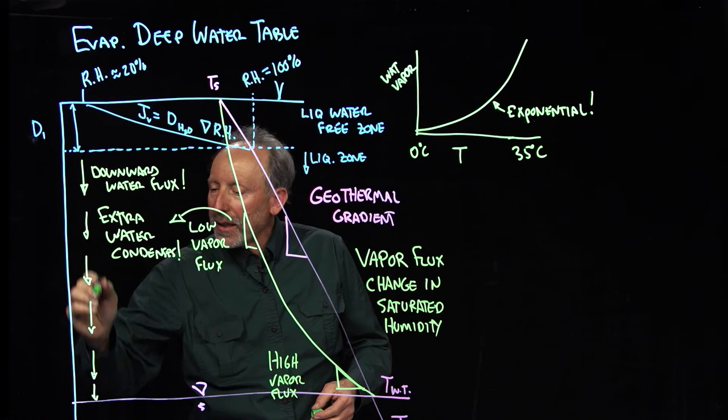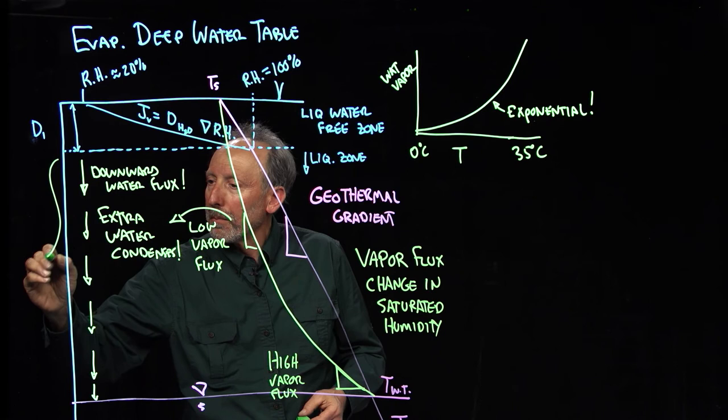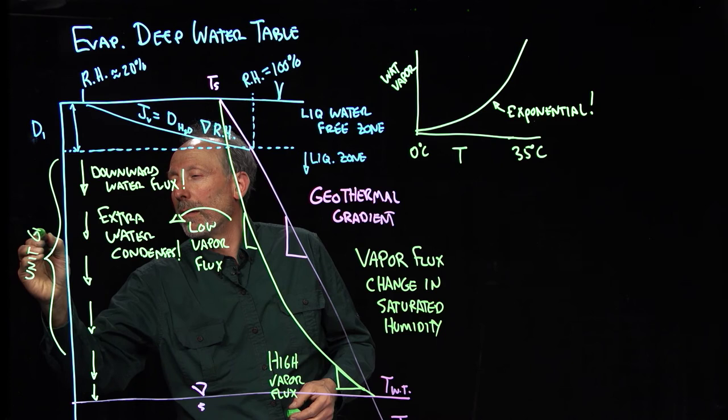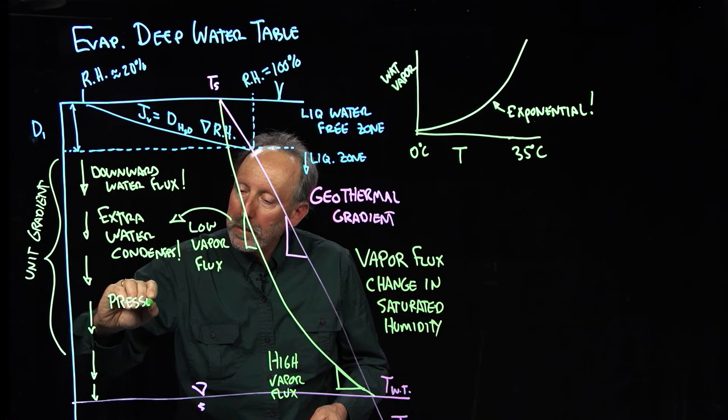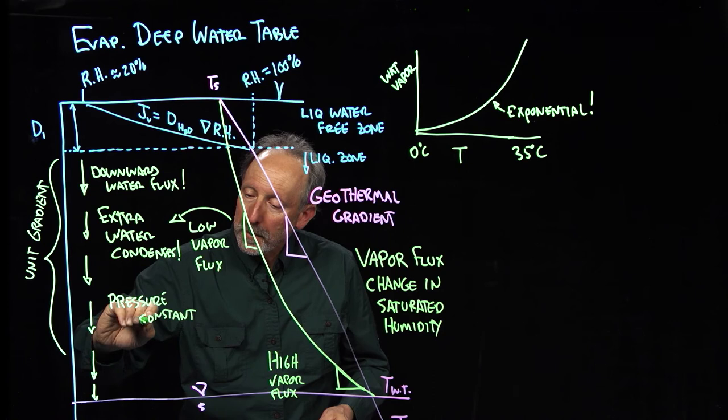So this then becomes a constant flux. So in this whole region, we have a unit gradient. And what we learned in the unit gradient flow is that means the pressure is constant. Remarkable.